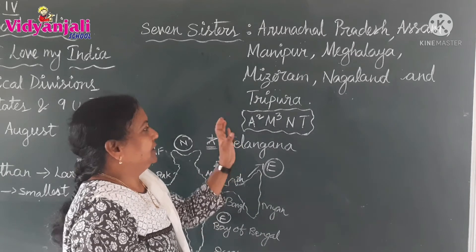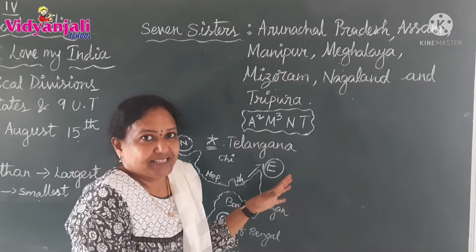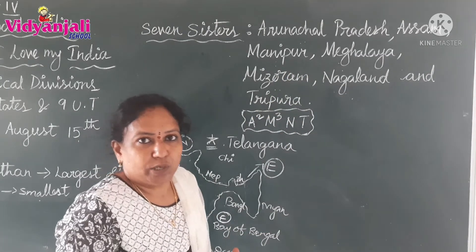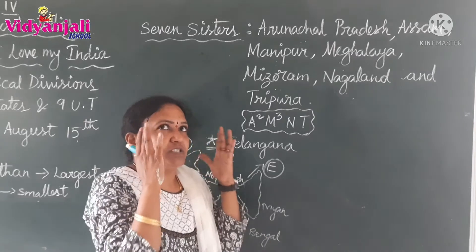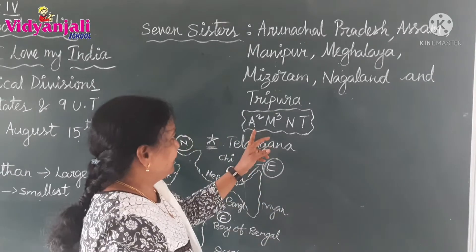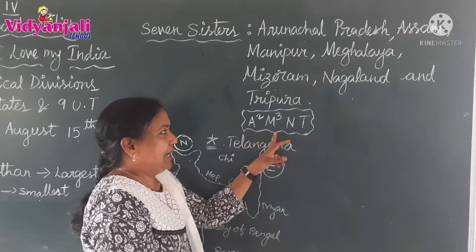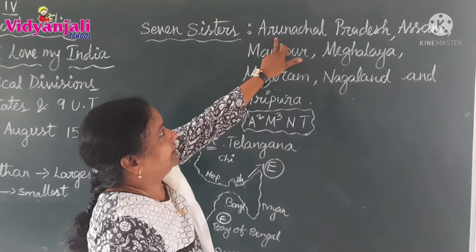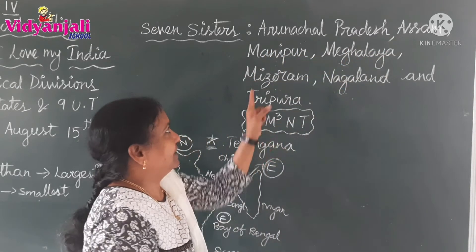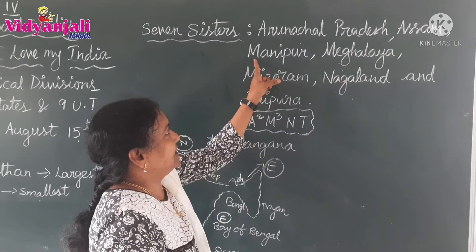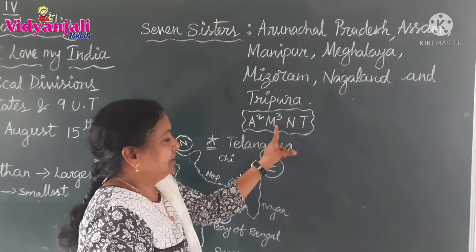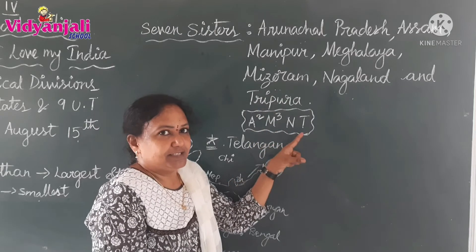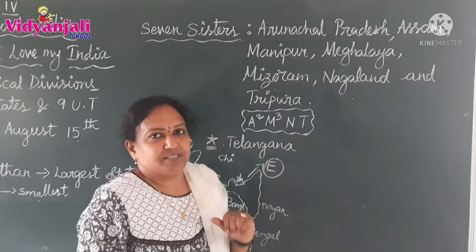Just a small tip, children — we can remember these states easily. If I ask which states are known as seven sisters, use this trick: A-square, M-cube, and N, T. A-square means two states starting with A — Arunachal Pradesh and Assam. M-cube means three states starting with M — Manipur, Meghalaya, Mizoram. Then Nagaland and Tripura. A², M³, N, T — a small trick to remember the seven sisters.